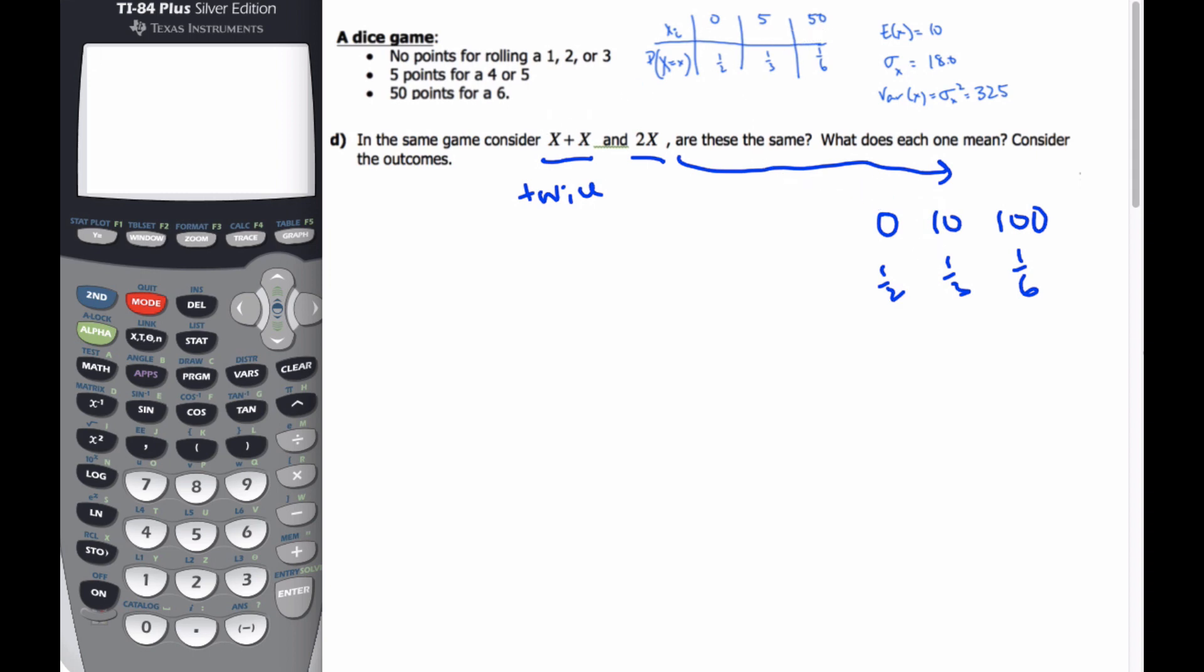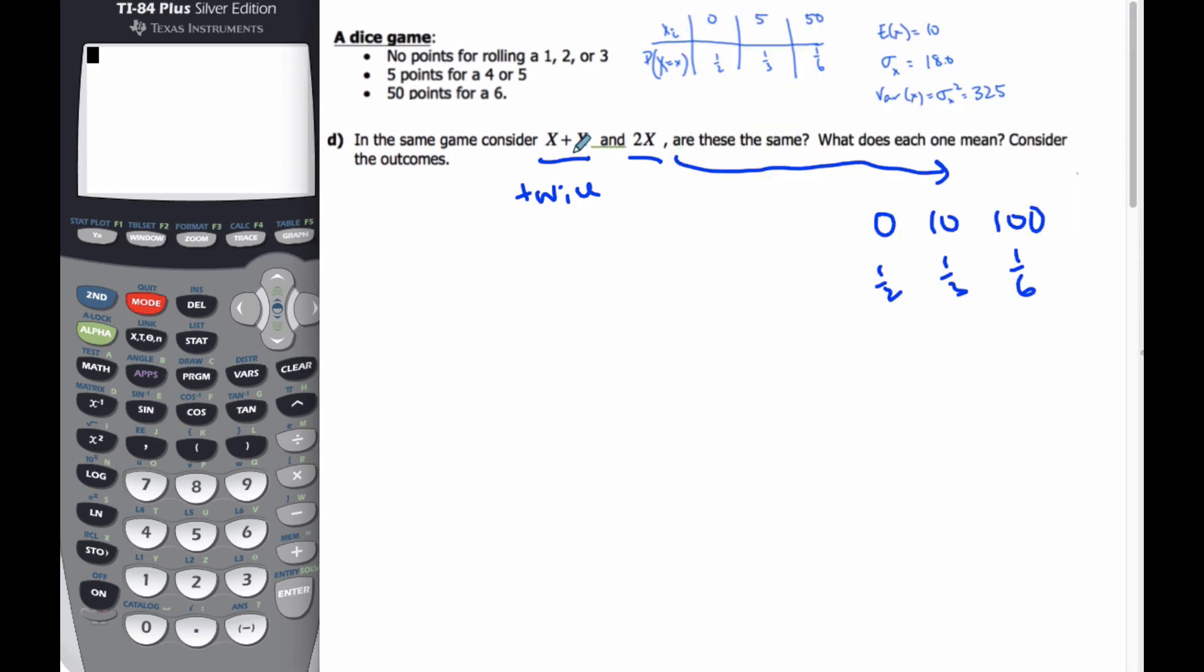Whereas X plus X means that I have played the game twice. So if I think about that, I'm going to go through and make a tree diagram and assign probabilities to it. But I know here is my probability of getting 0 is 1 half. But from 0, if I play again, I could get 0, I could get 5, or I could get 50. And it has the probability of a half, 1 third, 1 sixth. If this is my total score, well, my total points is 0, 5, and 50.